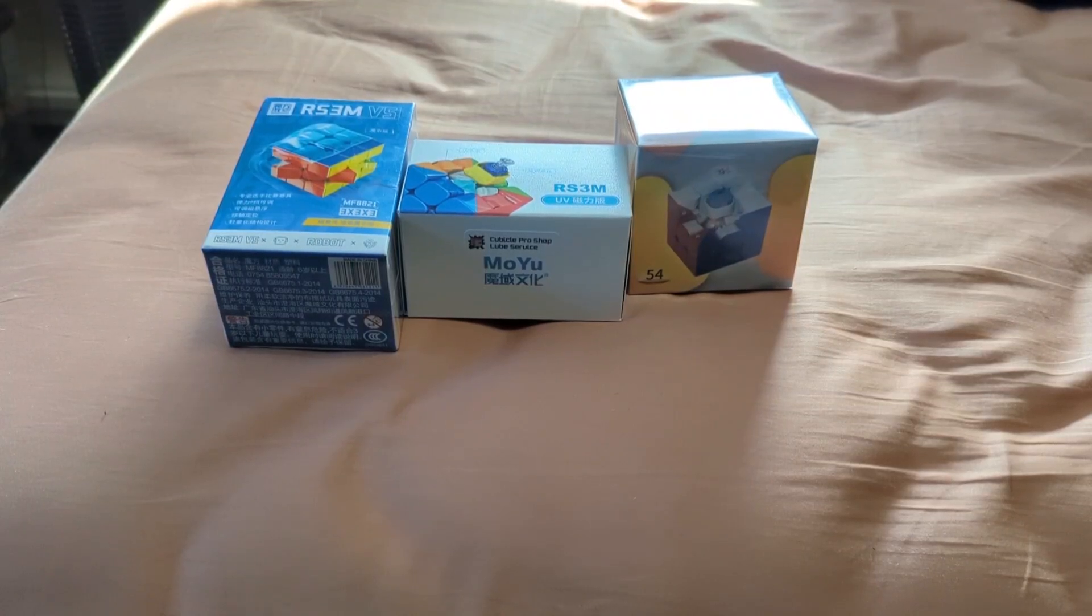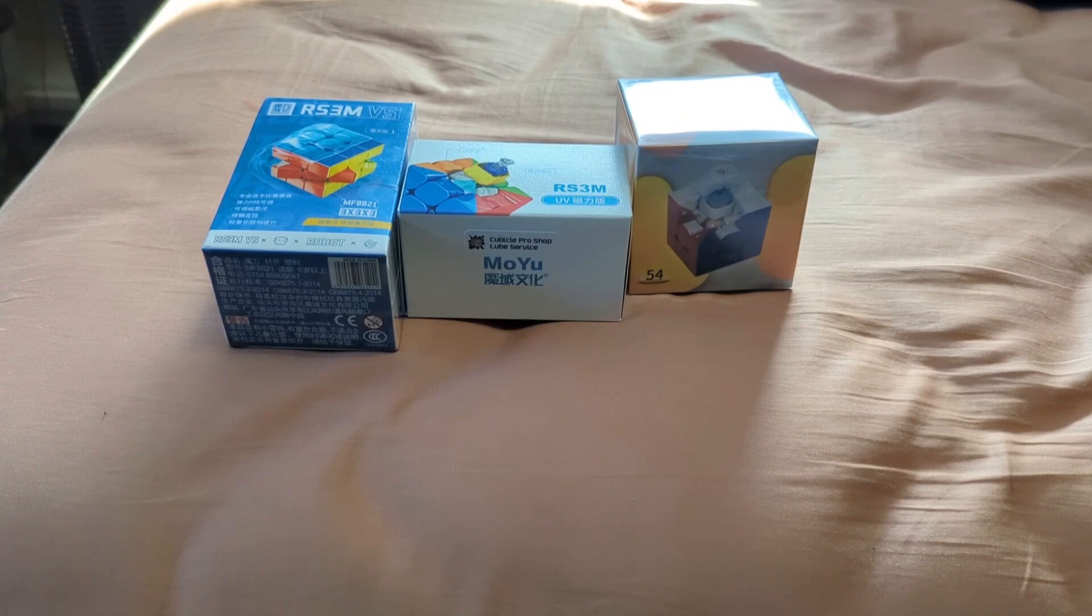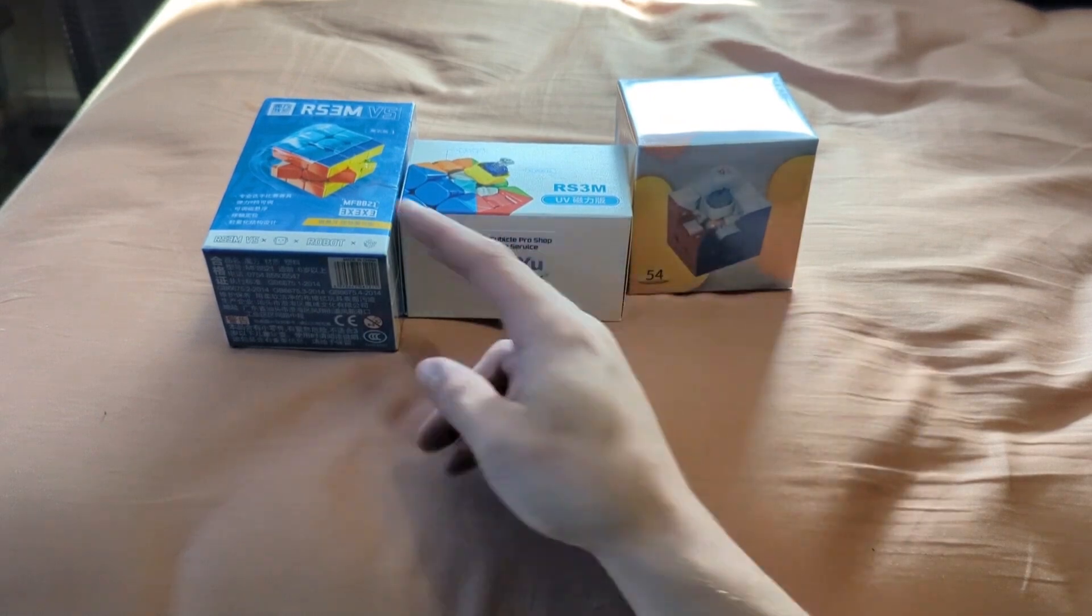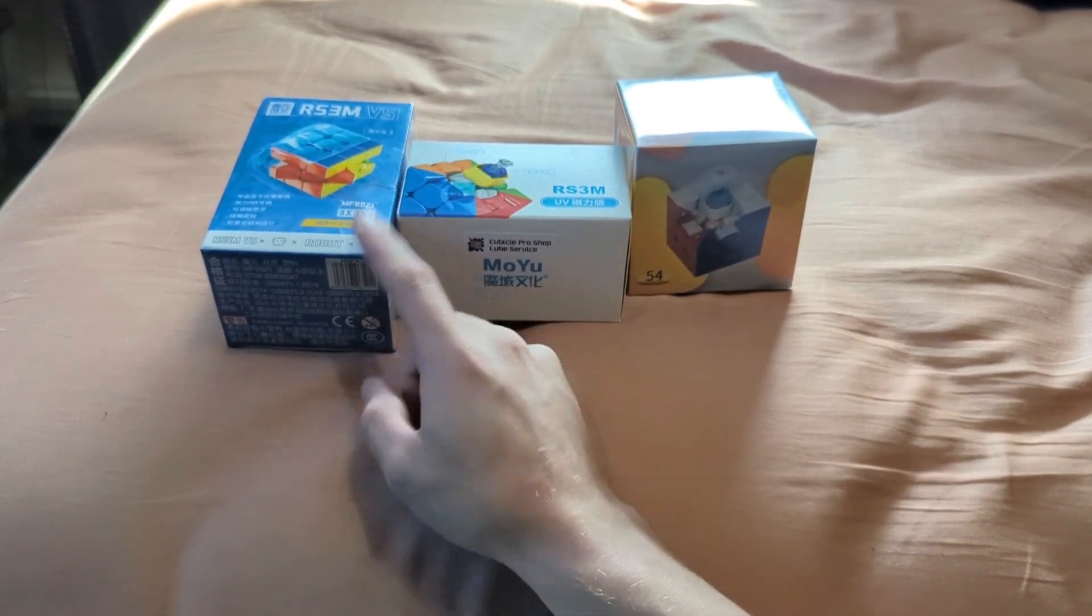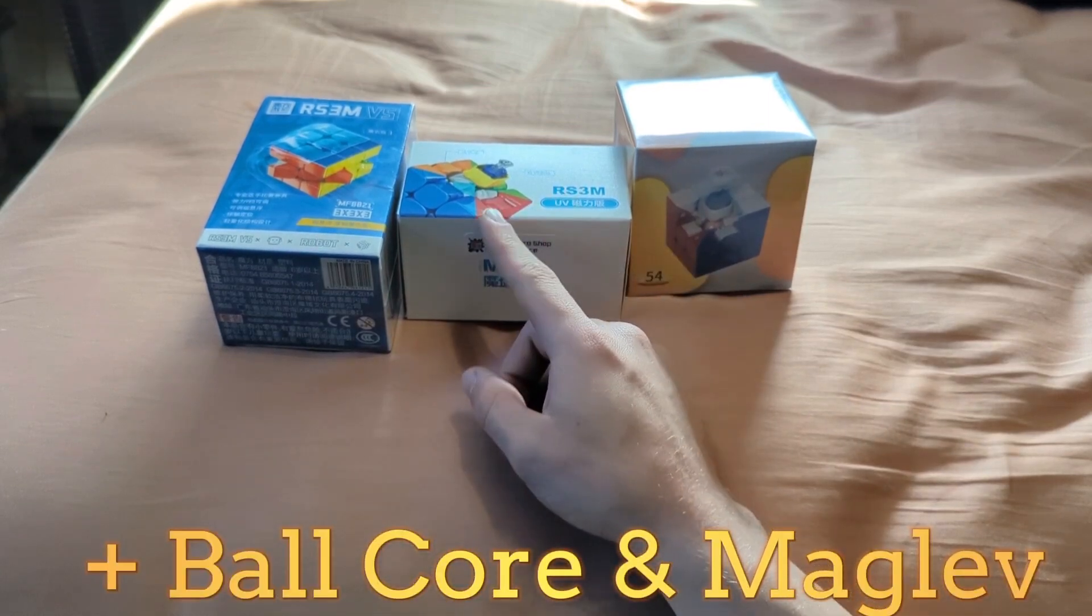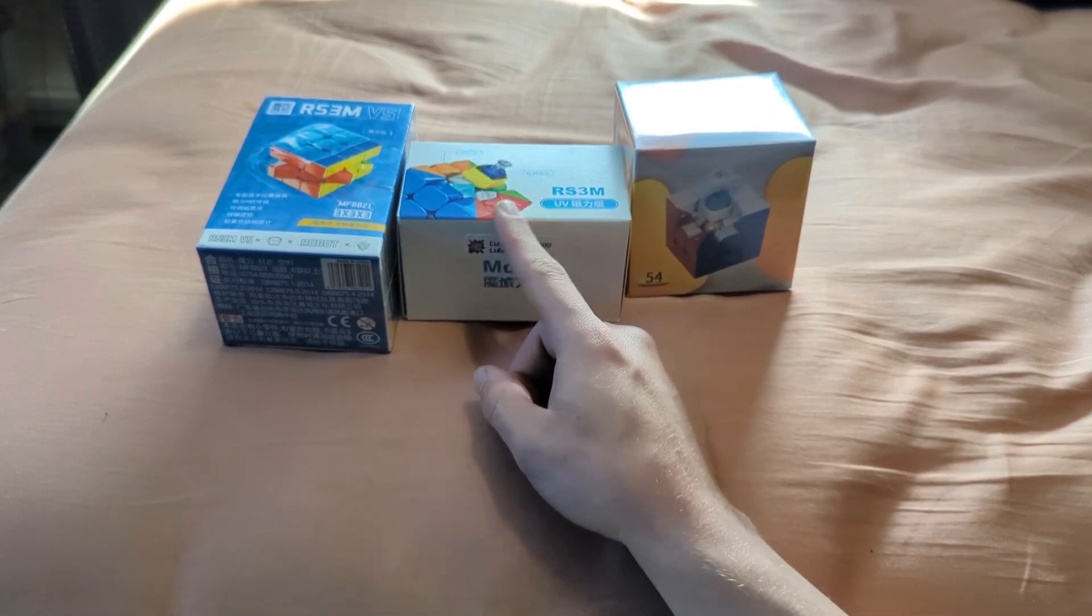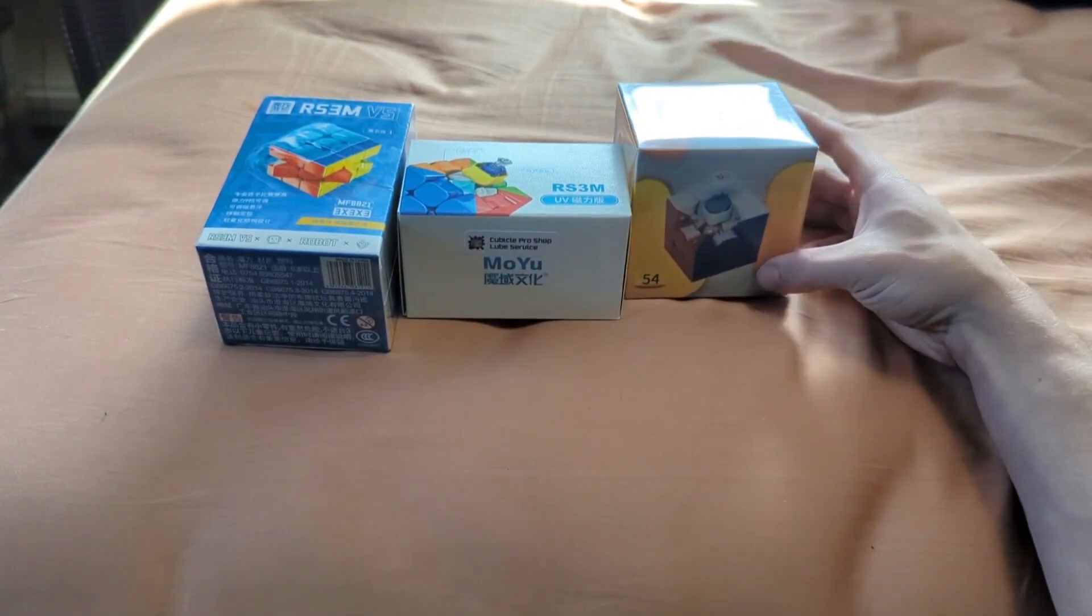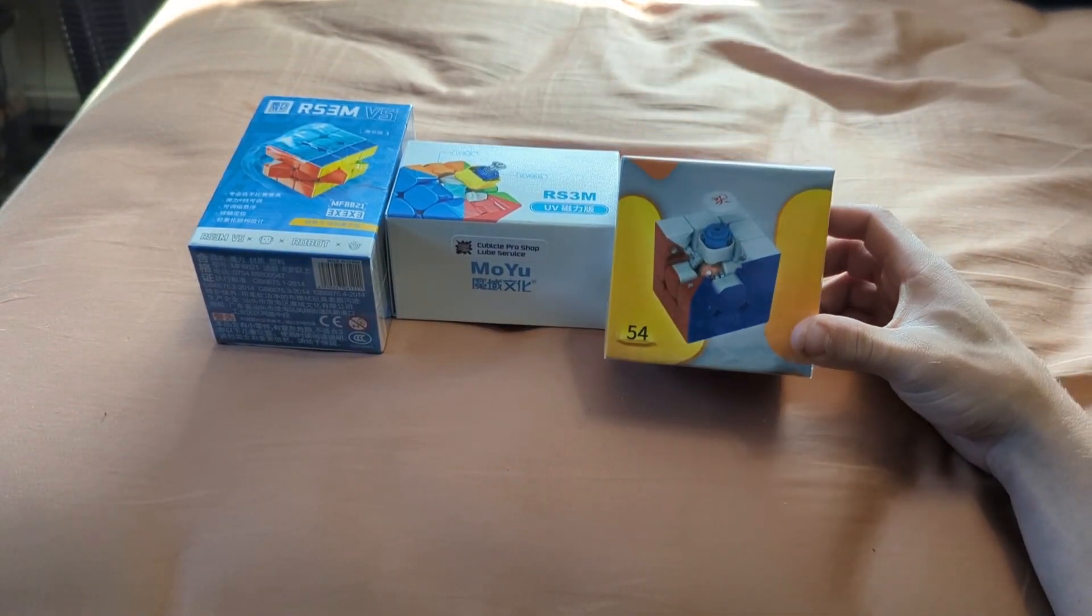What's up guys, this is sg2413 and welcome back to another unboxing video. For today, we've got these three cubes: two RS3Ms - the V5 with UV and robot stand, and the RS3M 2020 with UV and Cubicle Pro Shop loop service - and then this right here is a Guhong Pro.